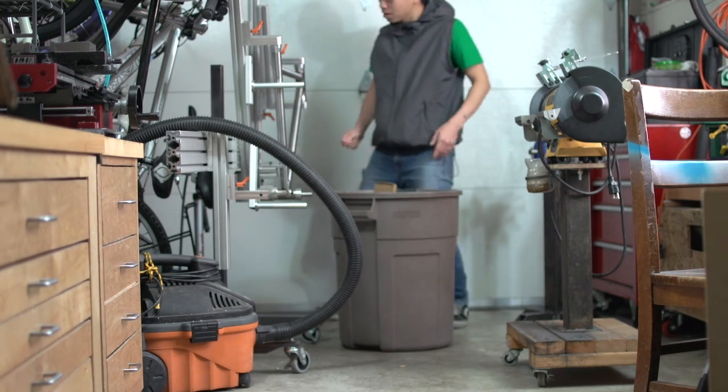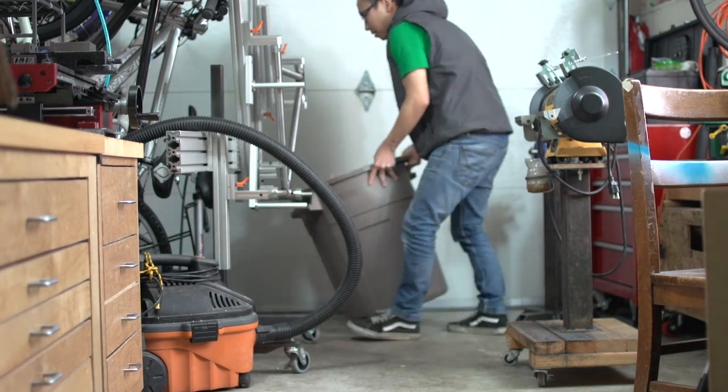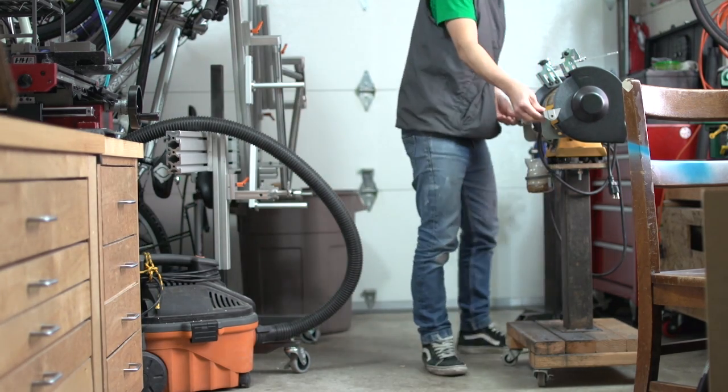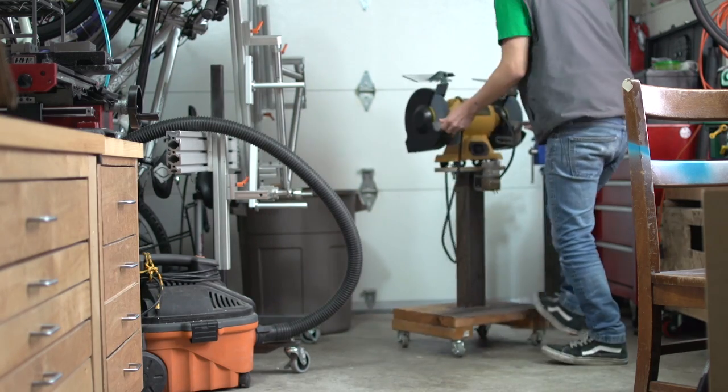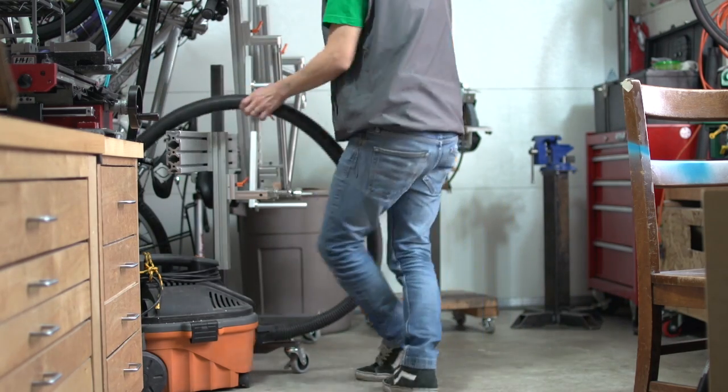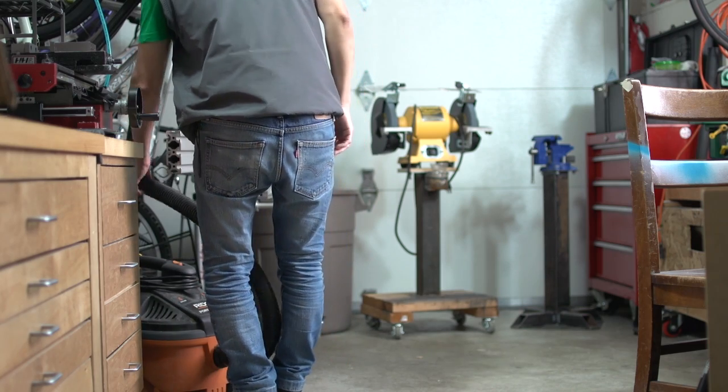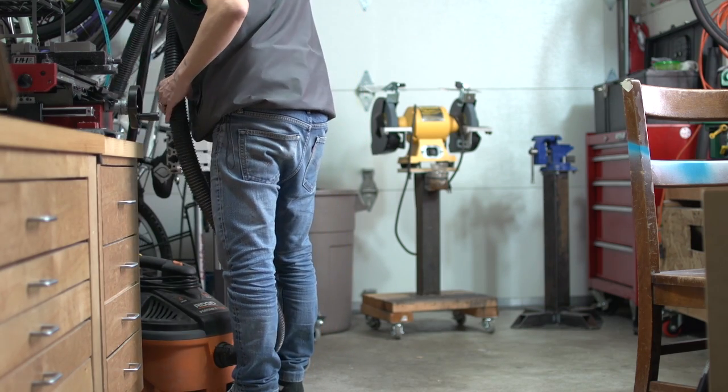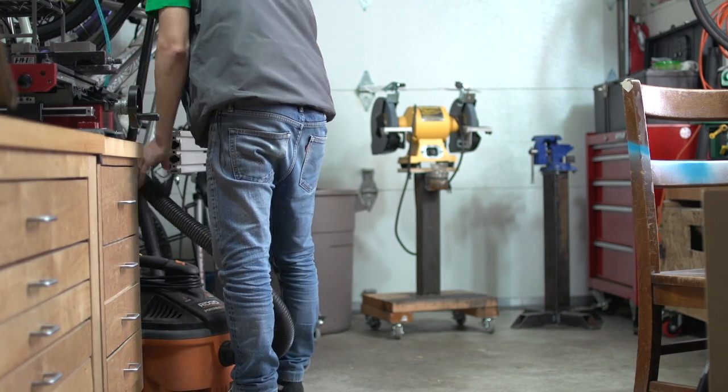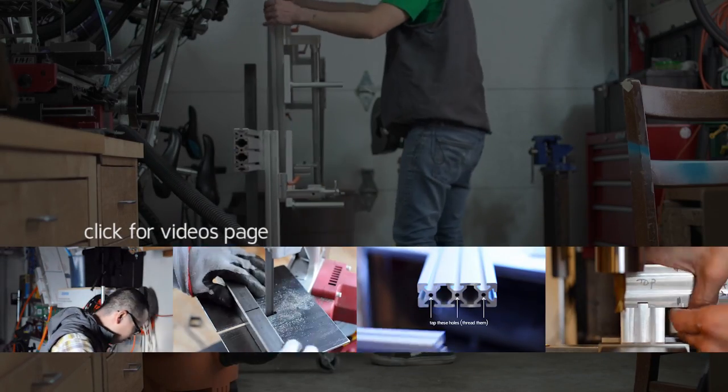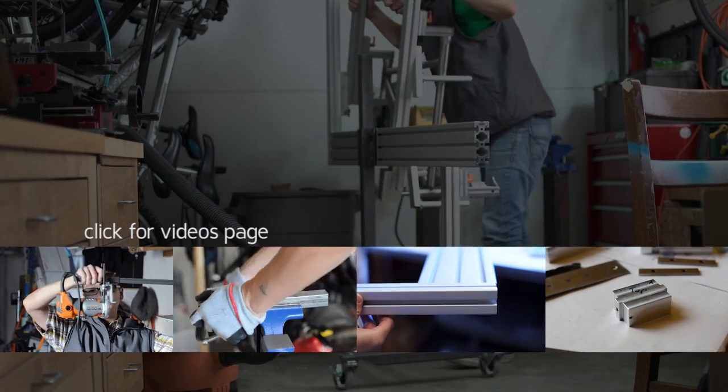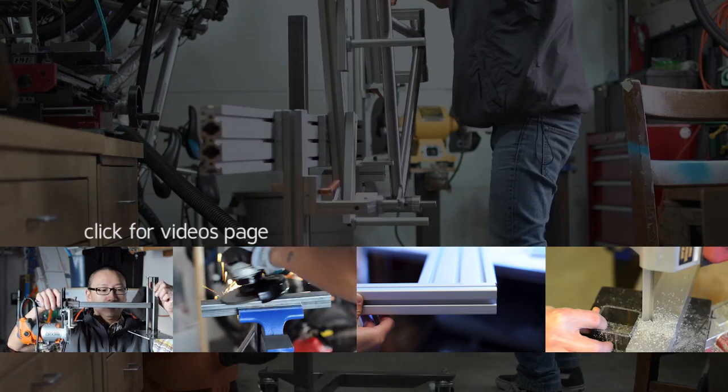Hello and welcome back. In this video we are finally onto the mitering and notching of the seat stays. We'll be using the nifty seat stay miter fixture that we made in the last video. If you are just dropping into this channel now, feel free to keep watching, but after you might want to jump back and watch some of my older stuff if you enjoyed this video. With that said, let's get started.